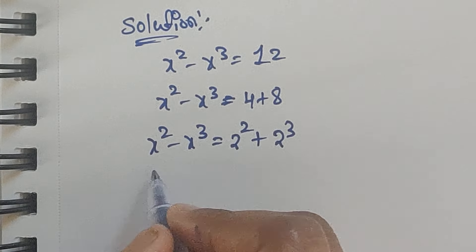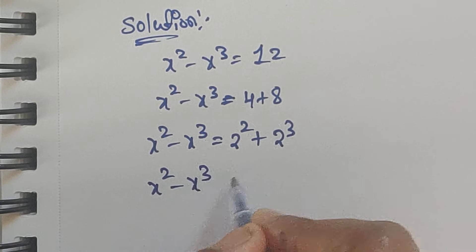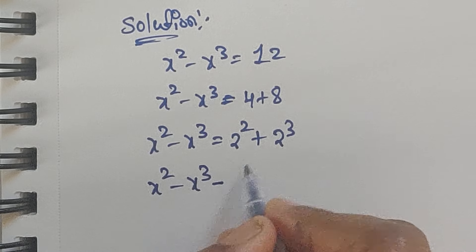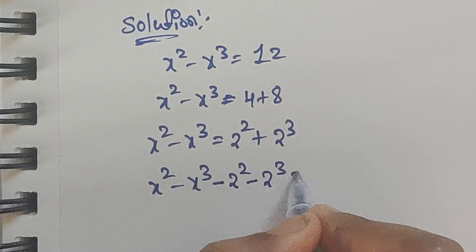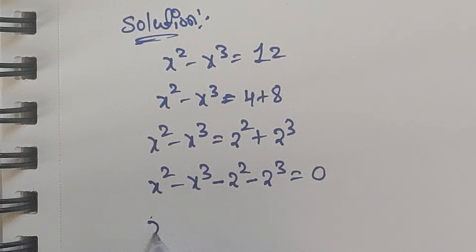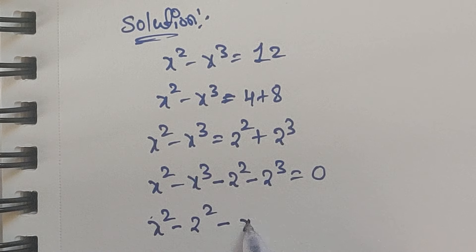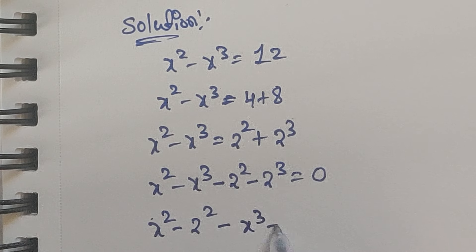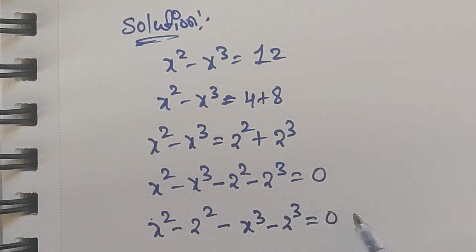So now we move these values to the left side. They will become negative values. So x squared minus x cubed minus 2 squared minus 2 cubed equals 0. So x squared minus 2 squared, minus x cubed minus 2 cubed, equals 0.